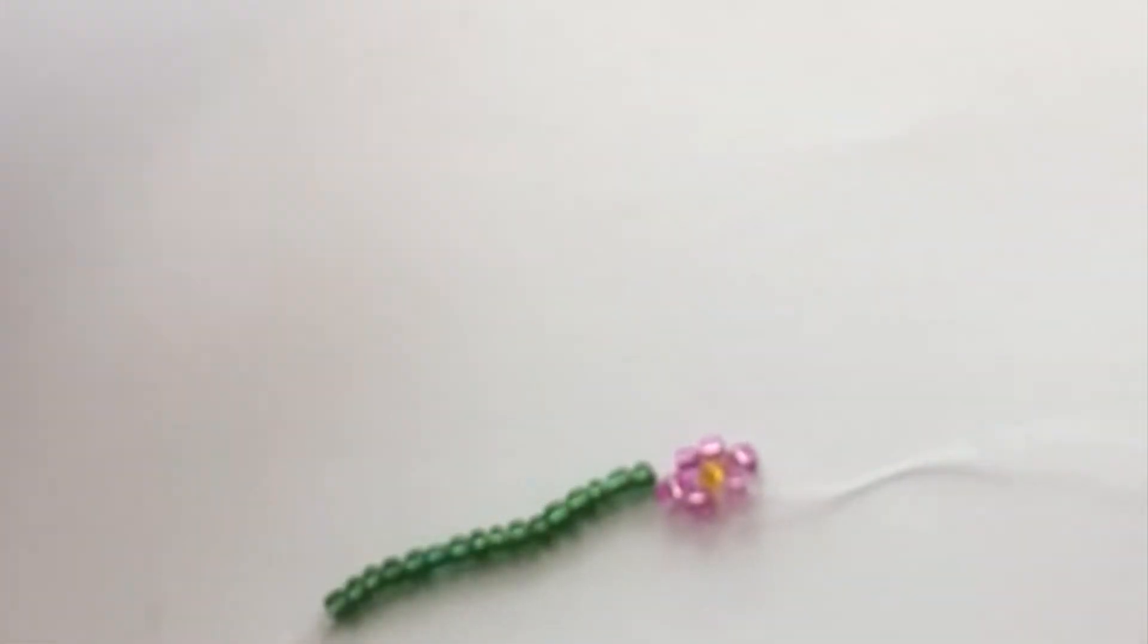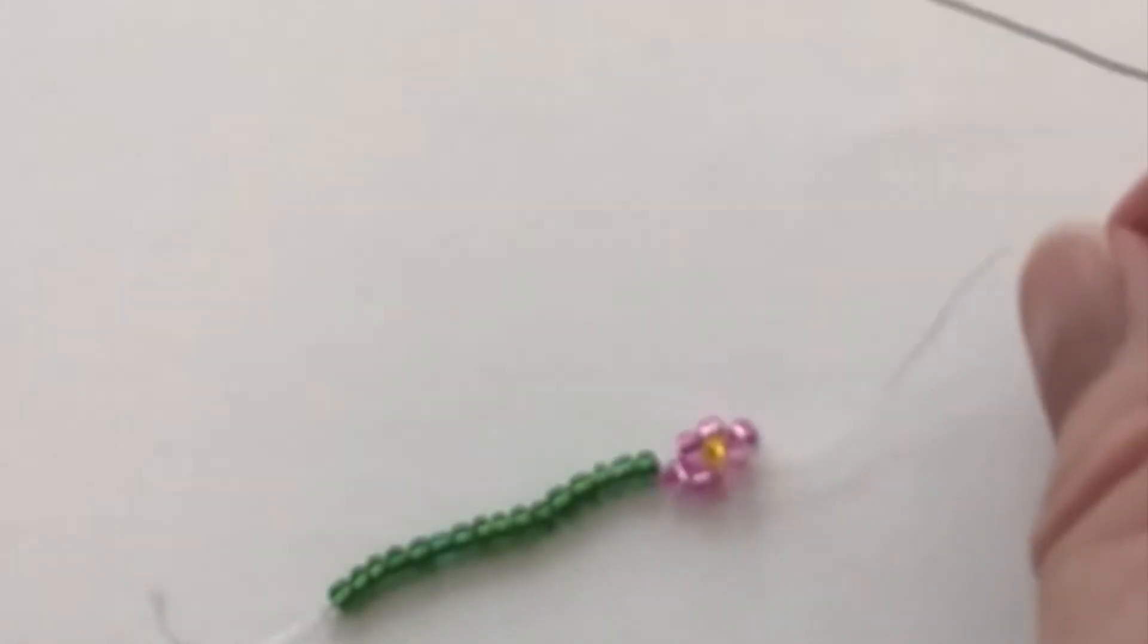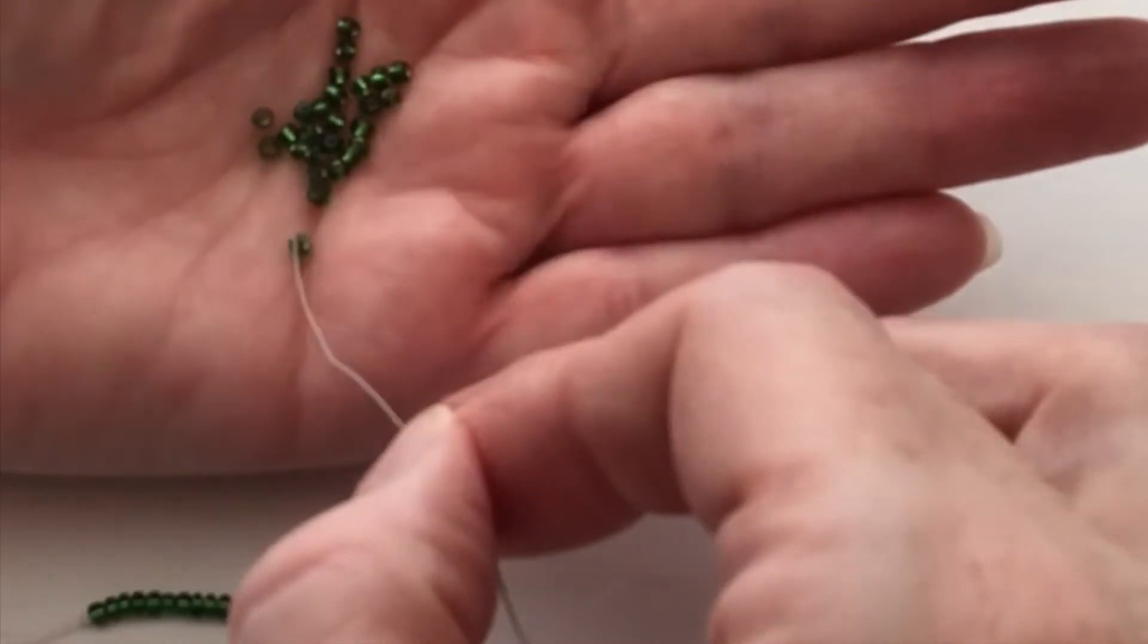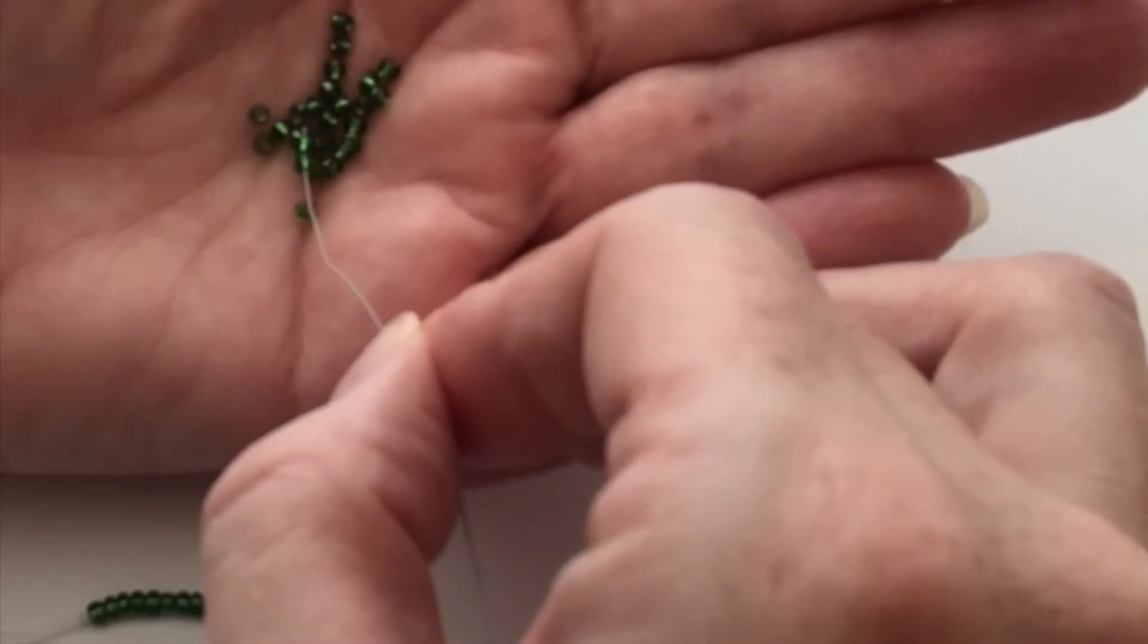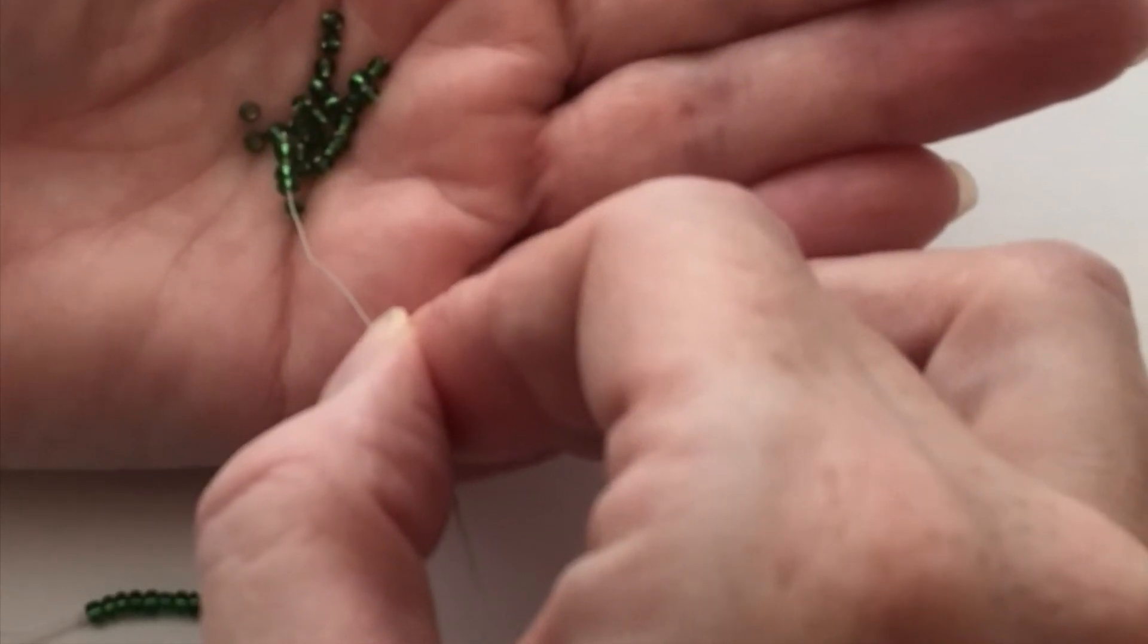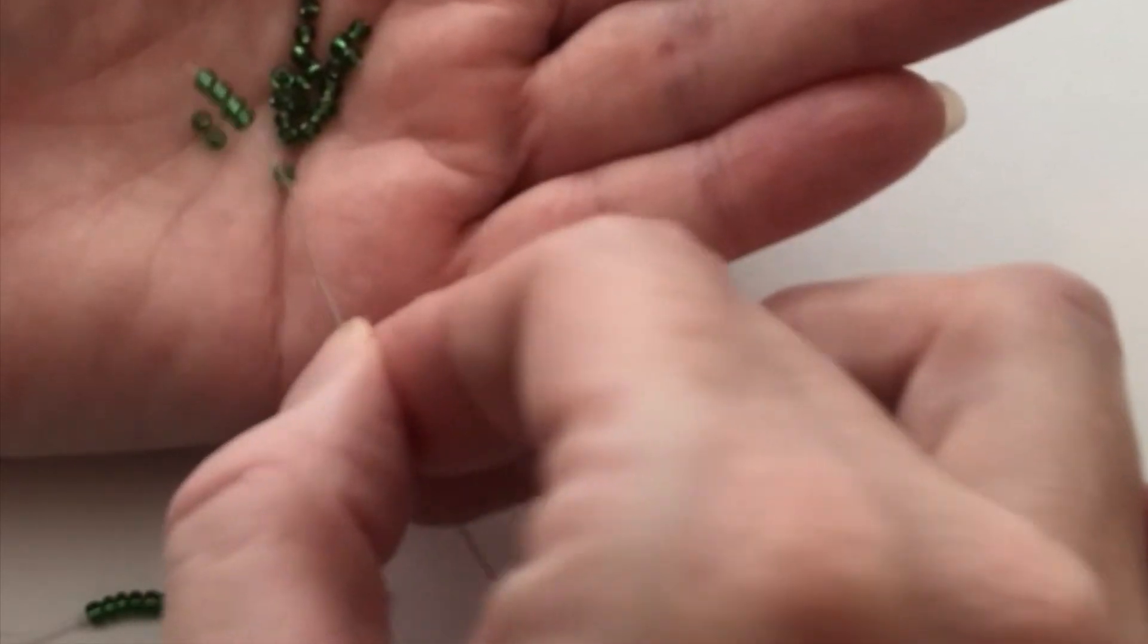All right, now we're going to start adding beads to make the second part of the band. You're going to add enough beads to about equal the first half of the band. I'm going to do about 15 again here.